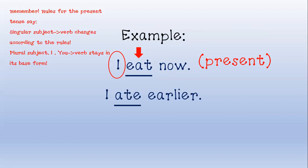Let's look at the second example: 'I ate earlier.' Notice that the spelling is different — 'eat' becomes 'ate' — because 'ate' is in its past tense. When working with the past tense, you need to memorize these verbs, and you don't need to worry about the subject.